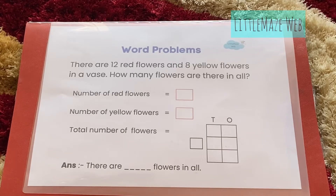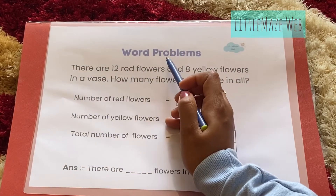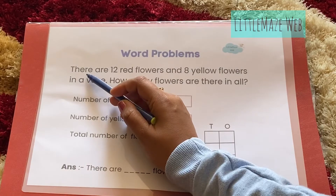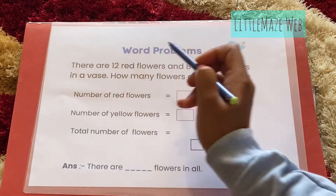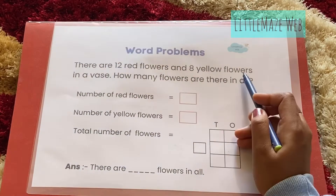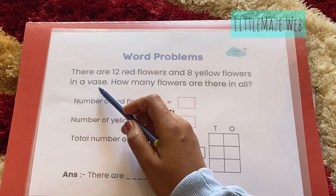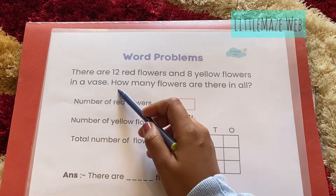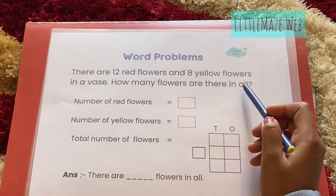Hi everyone, welcome to my channel Little Me's Web. Today we'll be practicing word problems. The first word problem is: there are 12 red flowers and 8 yellow flowers in Ava's garden. How many flowers are there in all?